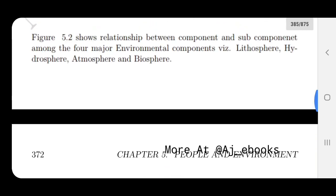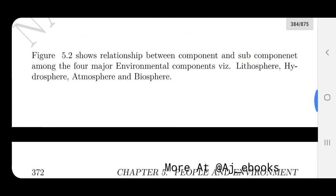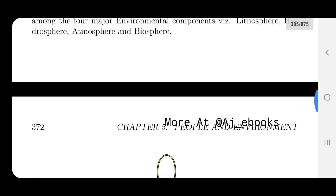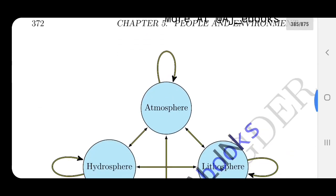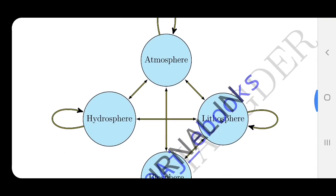This diagram shows the relationship between components and subcomponents among the four major environmental components: lithosphere, hydrosphere, atmosphere and biosphere.